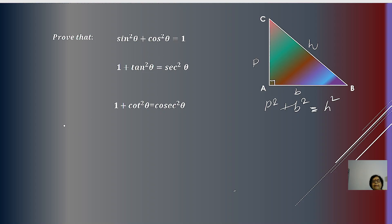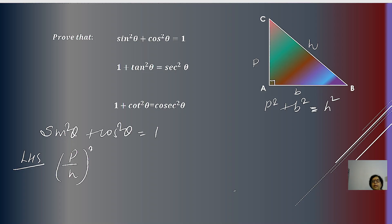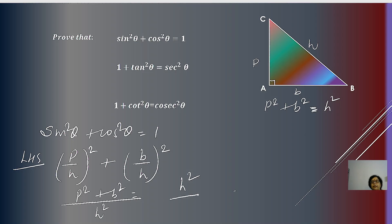To establish these identities, the first one is sin²θ + cos²θ = 1. Taking the left-hand side: sin θ = P/H, so sin²θ = (P/H)². Cos θ = B/H, so cos²θ = (B/H)². Taking the LCM, the numerator becomes P² + B², which equals H². So we get H²/H² = 1. Thus sin²θ + cos²θ = 1.